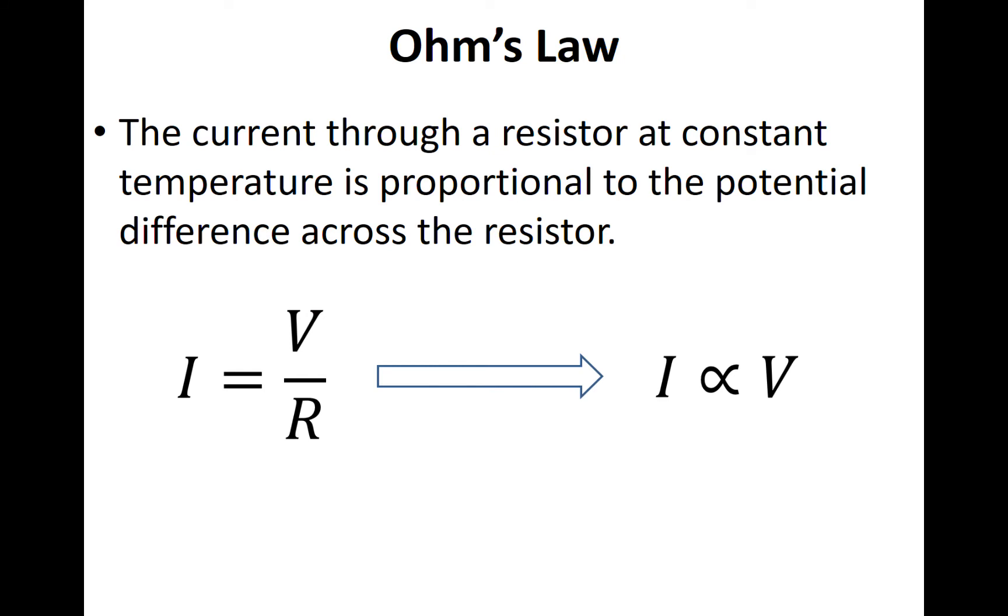Finally, we have Ohm's law. The current through a resistor at constant temperature is proportional to the potential difference across the resistor. That is to say, the current is proportional to the potential difference.